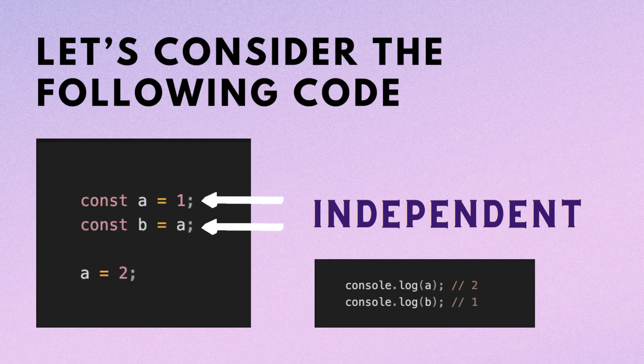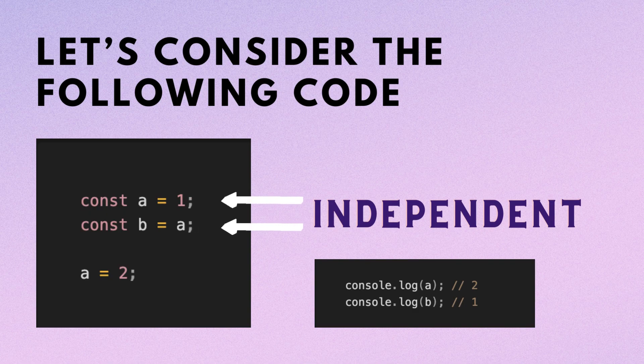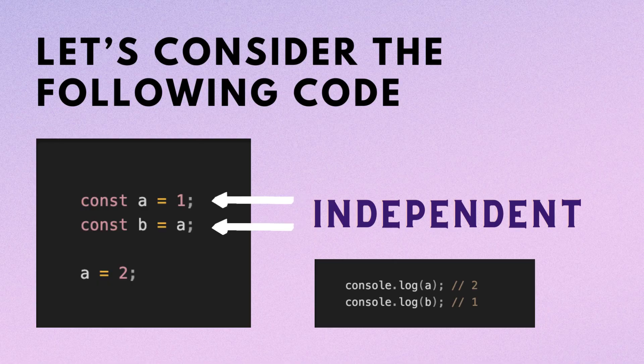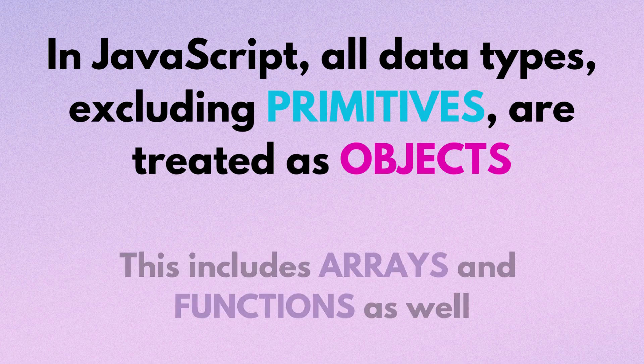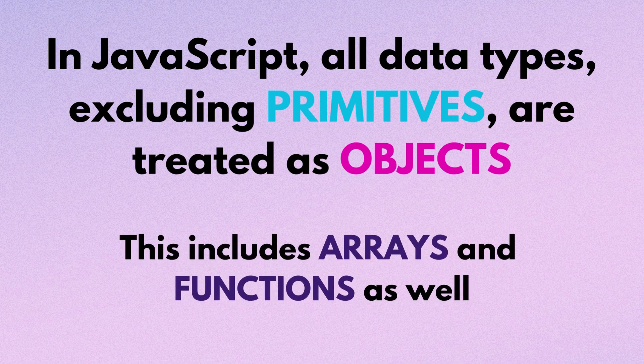For objects, however, the behavior is different. And remember, in JavaScript, all data types excluding primitives are treated as objects. This includes arrays and functions as well.